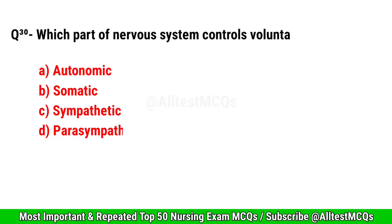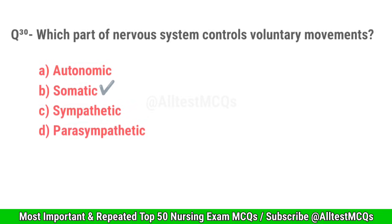Question No. 30. Which part of the nervous system controls voluntary movements? Correct option is B. Somatic.